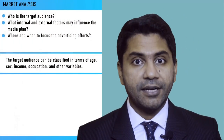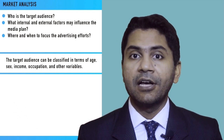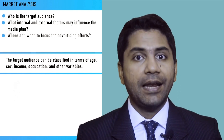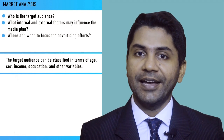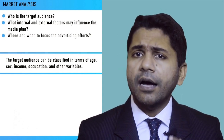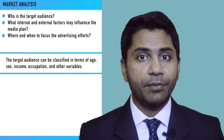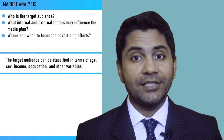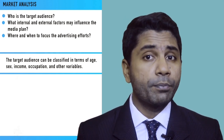The steps involved in developing a media plan are as follows. The first is market analysis — every media plan begins with a market analysis or environmental analysis. A complete review of internal and external factors is required. The media planner tries to identify answers to questions like: who is the target audience, what internal/external factors may influence the media plan, and where and when to focus the advertising efforts. The target audience can be classified by demographics such as age, sex, income, occupation and other variables, which helps the planner choose the most appropriate media or media mix.